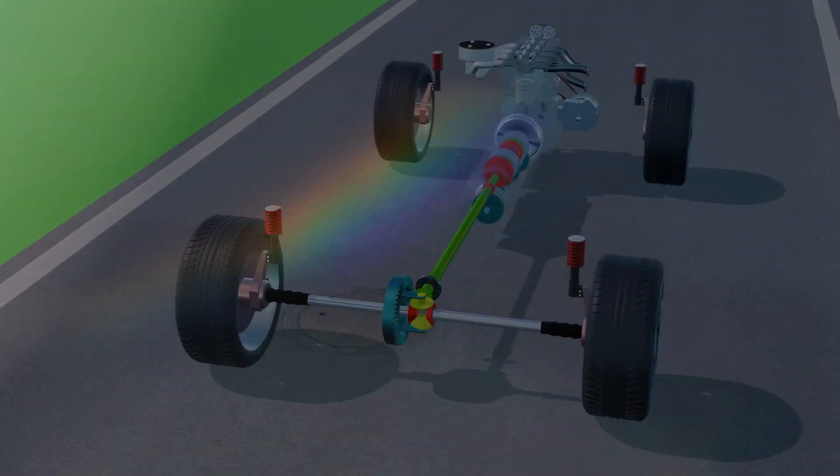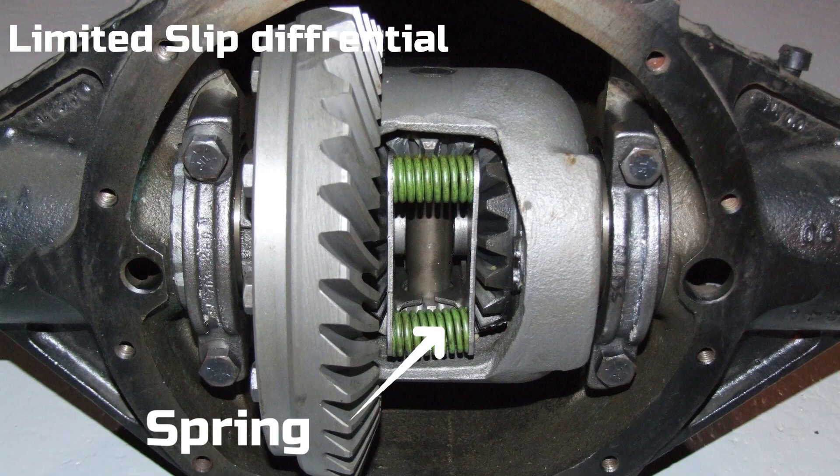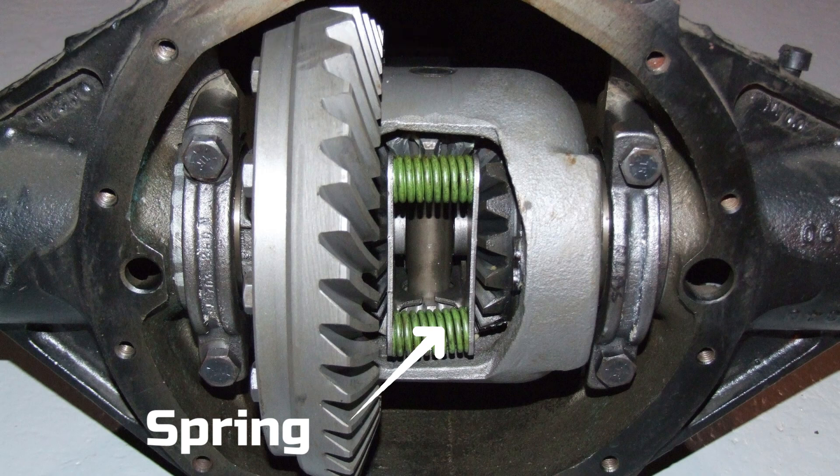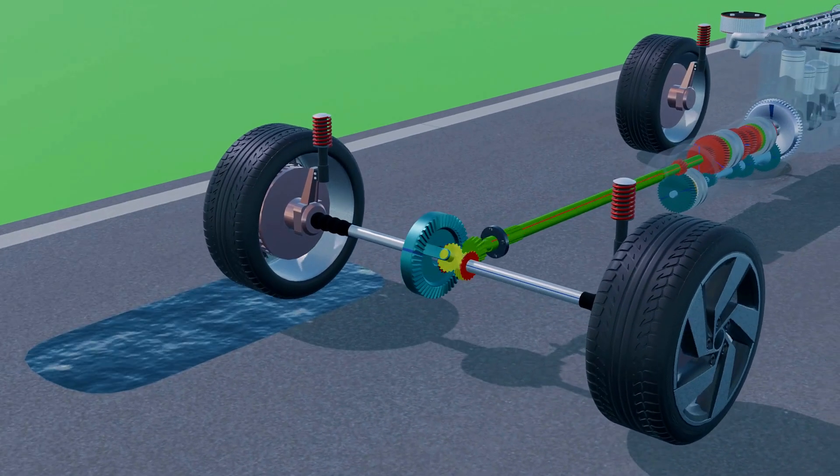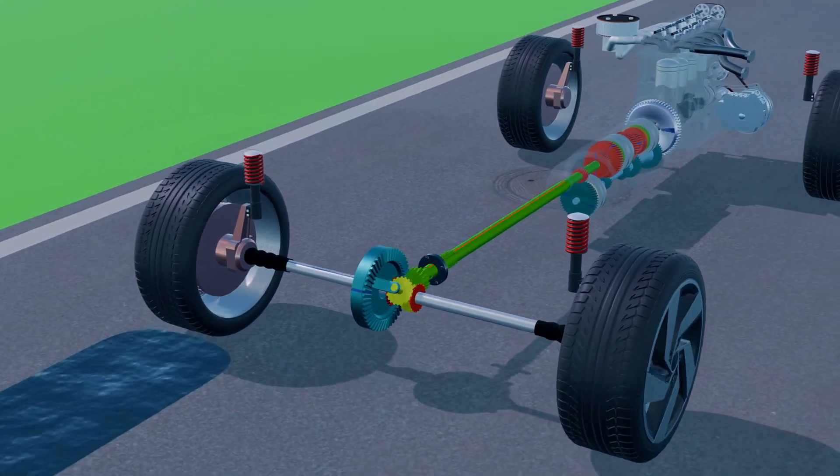An advanced version of this is the limited-slip differential or LSD, which can partially lock the spider gear inside the differential, allowing power to be better distributed even when one wheel starts to slip.